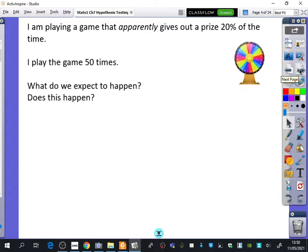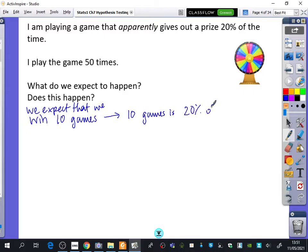I have got here an introduction to how I want to think about hypothesis testing. I've said I am playing a game that apparently gives out a prize 20% of the time. Maybe it's this spinning wheel game. I said apparently because I'm going to question whether I think that is actually true or not. Someone has told me you win a prize 20% of the time. I play the game 50 times. What do we expect to happen?